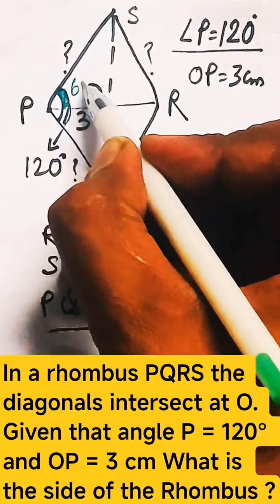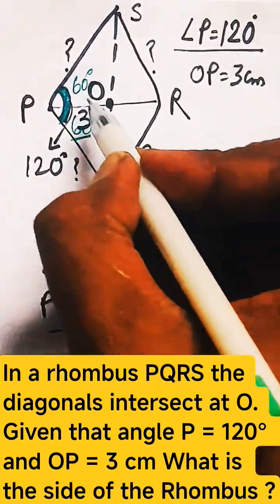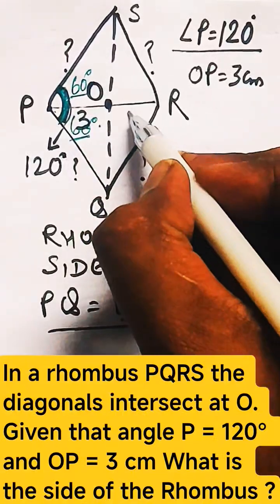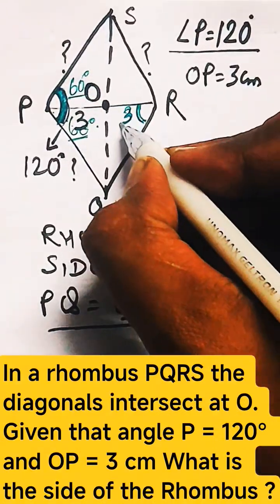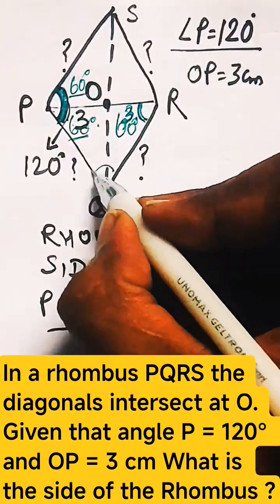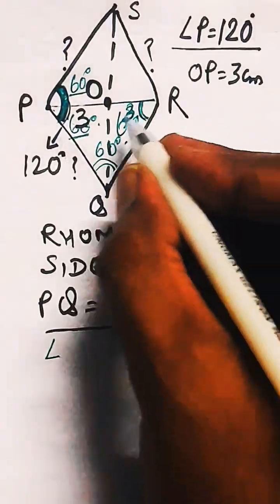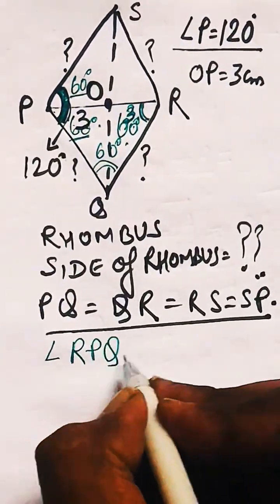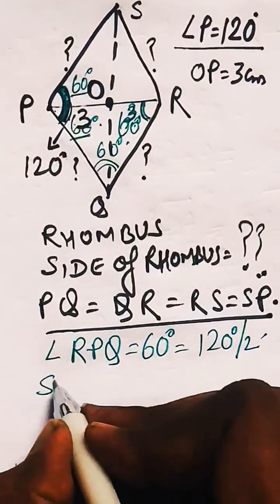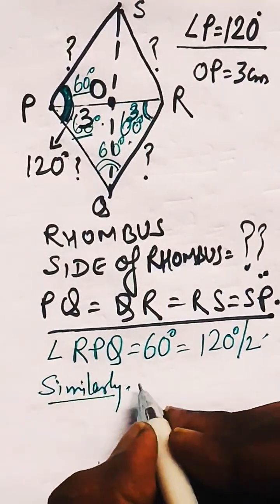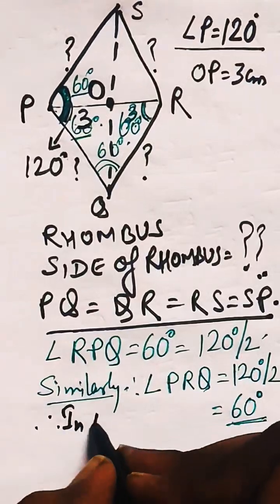The diagonal bisects angle P, so angle RPQ is 60 degrees. Since opposite angles of a parallelogram are equal and a rhombus is a parallelogram, angle R is also 120 degrees, and half of this is angle PRQ, which is also 60 degrees. The third angle Q will be 60 degrees because the sum of all angles of a triangle is 180 degrees. Adding angle RPQ and angle PRQ and equating with 180 degrees gives angle Q as 60 degrees.